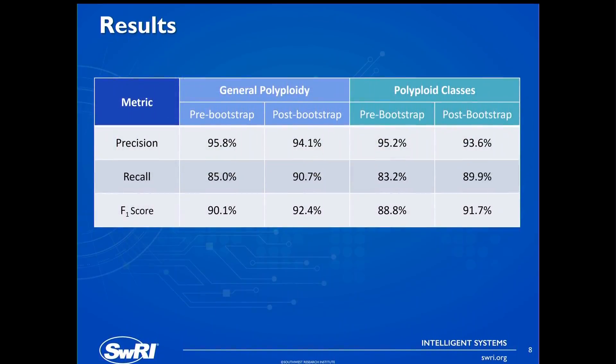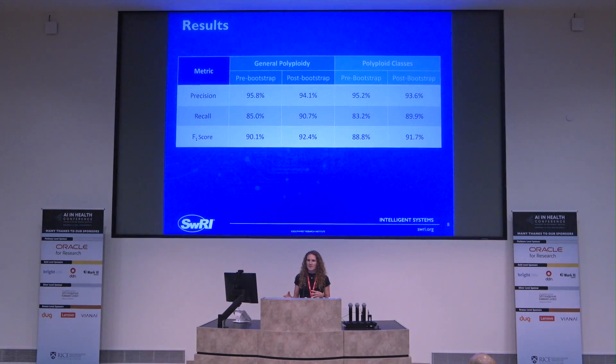For the results, I wanted to compare before and after bootstrapping to make sure it was actually productive. We had model parameters saved for both, so you can use the previous one if bootstrapping wasn't effective. The results are split into general polyploidy detection — how accurately the algorithm detected any polyploid cell — and polyploid classes, meaning how well it identified each cell as 4N, 8N, or cellular polyploidy.